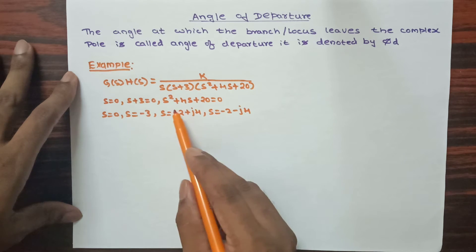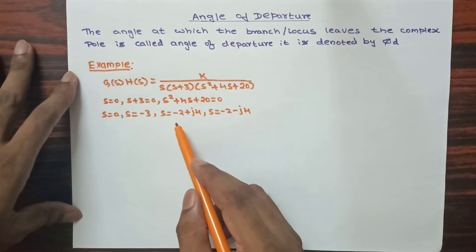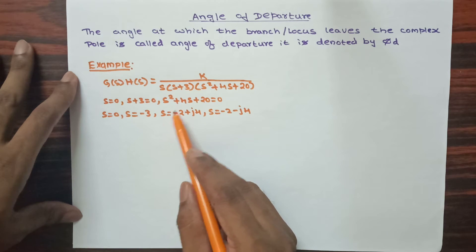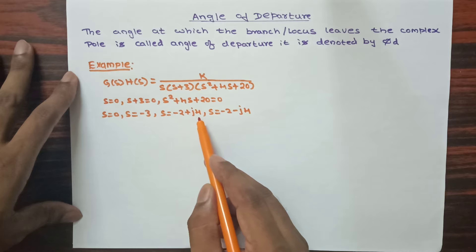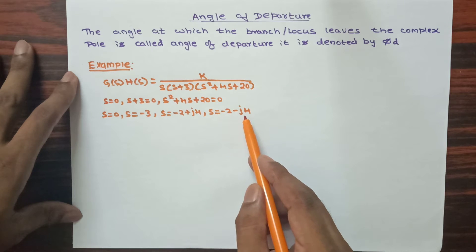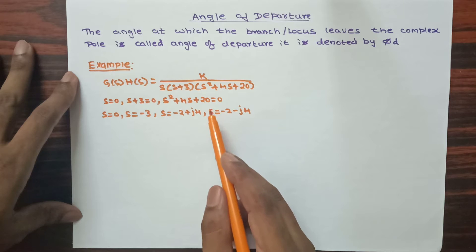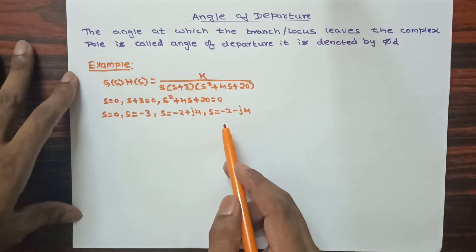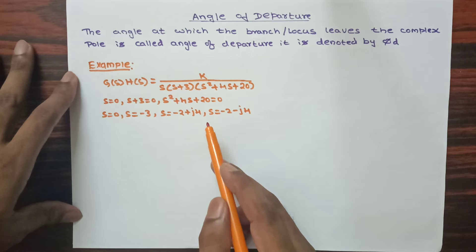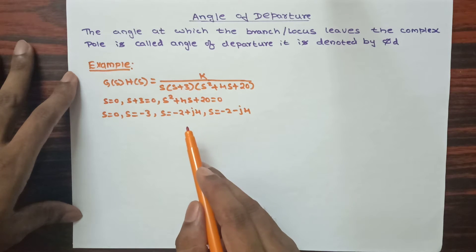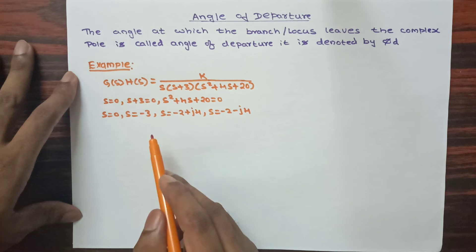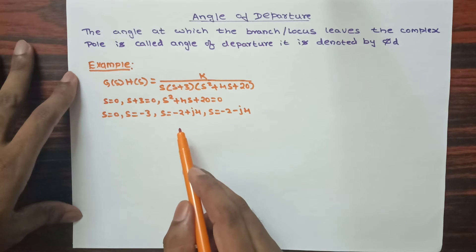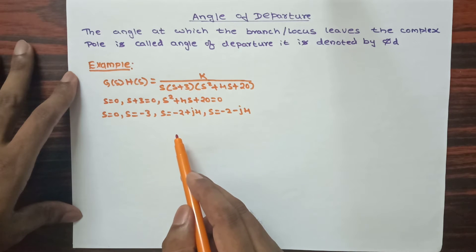From the quadratic equation I am getting two complex poles: s = -2+j4 and s = -2-j4. Remember, when there is a quadratic equation I may get complex poles, and if I am getting complex poles then I need to calculate angle of departure only for the complex poles. For real poles I am not going to calculate the angle of departure. Next we are going to plot the pole-zero plot and from that calculate the angle of departure.